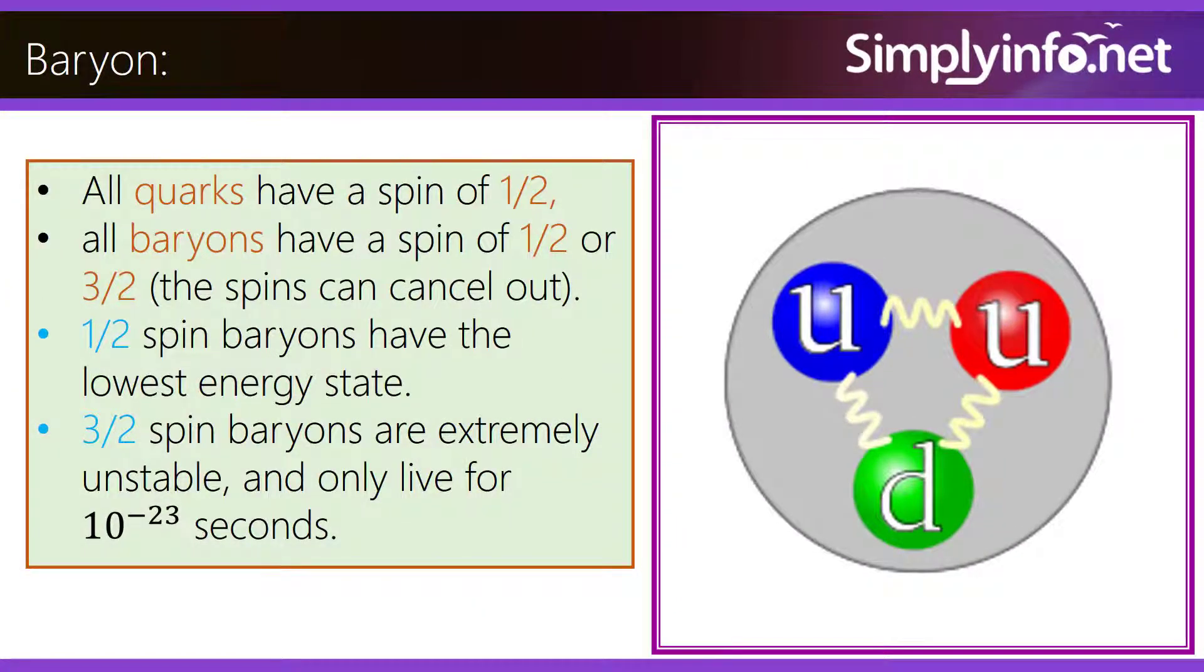All quarks have a spin of 1/2. All baryons have a spin of 1/2 or 3/2. The spins can cancel out.